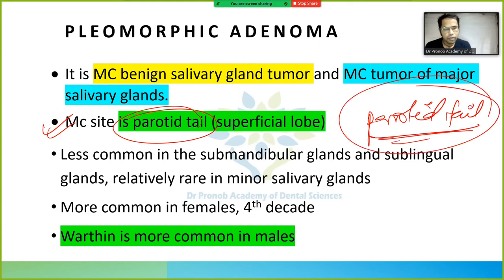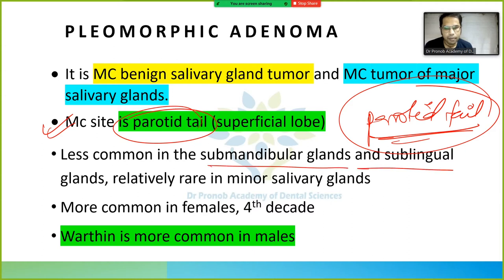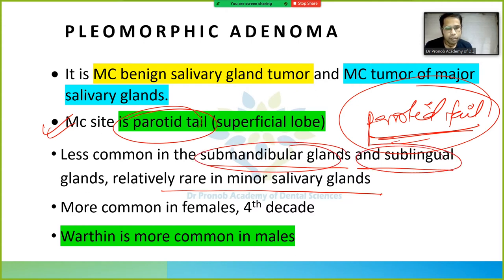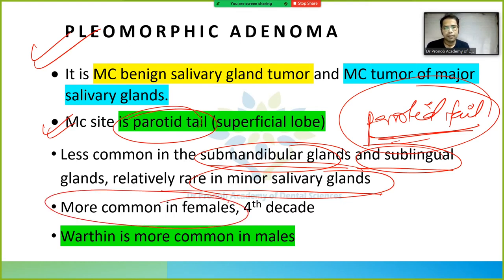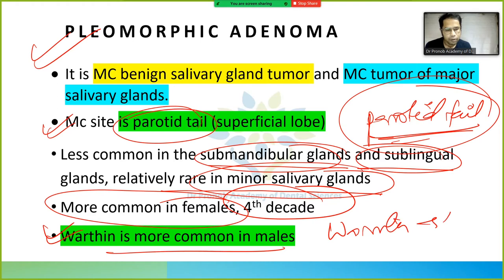The parotid tail is a portion of the parotid gland. Pleomorphic adenoma is more common in the parotid, less common in submandibular and sublingual glands, and rare in minor salivary glands. It is more common in females and occurs in the fourth decade. Warthin tumor, by contrast, is more common in males.